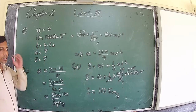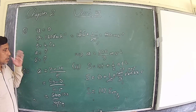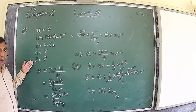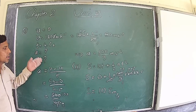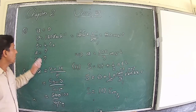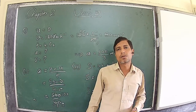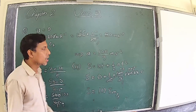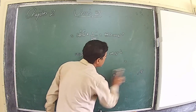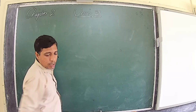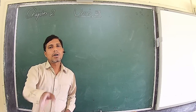This is how to approach a numerical. Whenever you read a numerical, first note down all the given information, then write what you have to calculate. Think about which formula connects the unknown quantities. Remember: if a body starts from rest, u = 0; if it comes to rest, v = 0; if it moves with constant velocity, a = 0. Practice the problems given in your textbook exercises. That was all for today — we will meet again in the next session. Thank you.